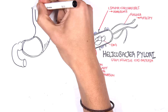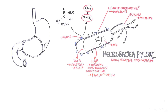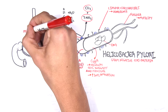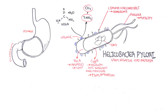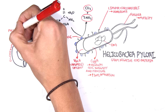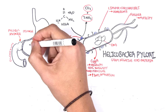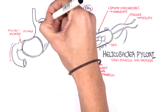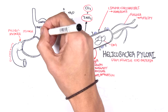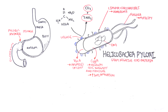H. pylori is a common cause of peptic ulcers and duodenal ulcers. Looking briefly at the anatomy of the stomach and GI tract: here we have the stomach and the duodenum, which is the first part of the small intestine. The pyloric sphincter is a barrier between them. The stomach has the fundus, cardia, body, and antrum. The antrum is most important here because it's where H. pylori typically resides.